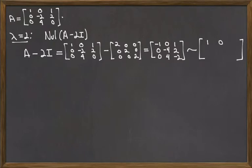I will row reduce this matrix. I use the computer to do this, and I find that there is a pivot in the first two columns, but not a pivot in the third column.